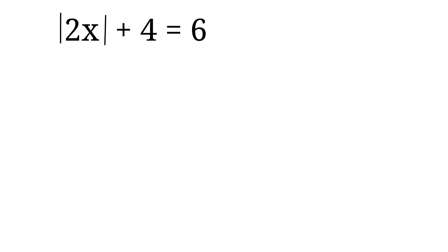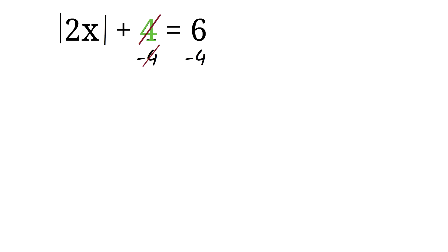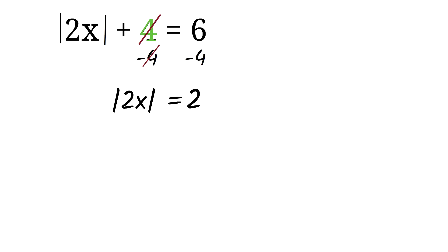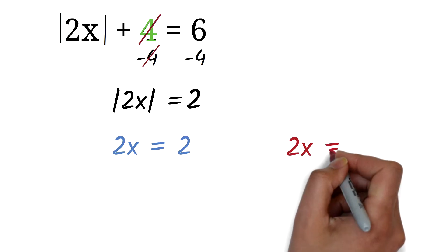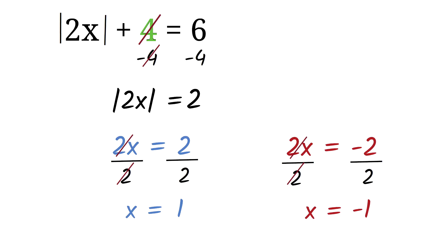The absolute value of 2x plus 4 is 6. Find x. We want only the absolute value on one side, so we subtract 4 from both sides: 6 minus 4 is 2, giving the absolute value of 2x equals 2. We equate 2x to positive 2 and negative 2. Dividing both by 2 gives x equals 1 and x equals negative 1. Therefore x equals negative 1 or x equals 1.